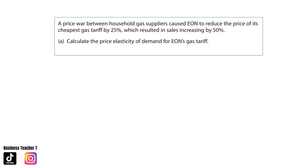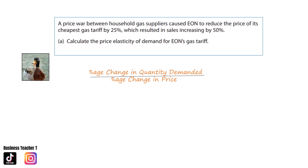Do ensure that you've put the formula down: percentage change in quantity demanded divided by percentage change in price. Here we can see that there was an increase of 50% in quantity demanded, and the change in price is negative 25%. That gives us an answer of negative 2.0.